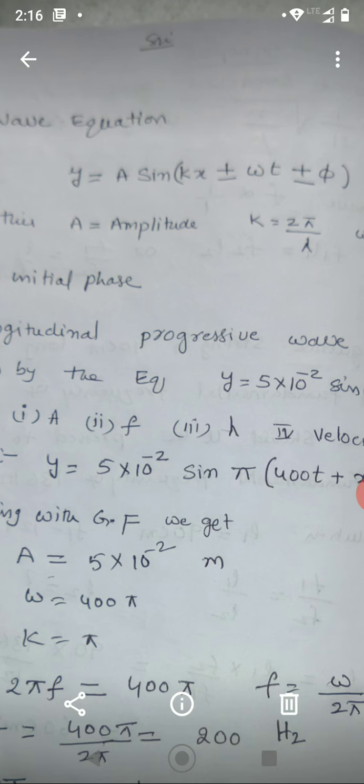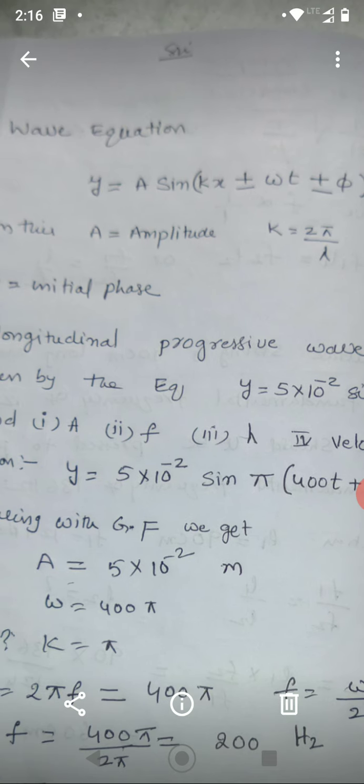X coefficient is k. That is, k is propagation constant and is given by 2 pi by lambda. Omega is angular frequency. It is coefficient of t. Plus or minus phi is initial phase.